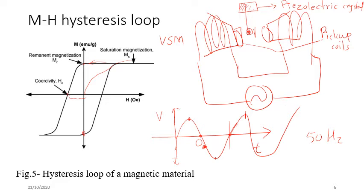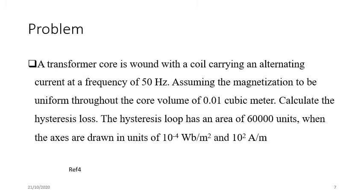There are two types of hysteresis loops: the M-H loop, which plots magnetization versus applied field intensity, and the B-H loop, where B = μ₀H + M, which includes the external applied field plus the magnetization inside the material. If we ignore the externally applied H, then B and M represent essentially the same quantity, and the B-H loop provides important additional engineering information.